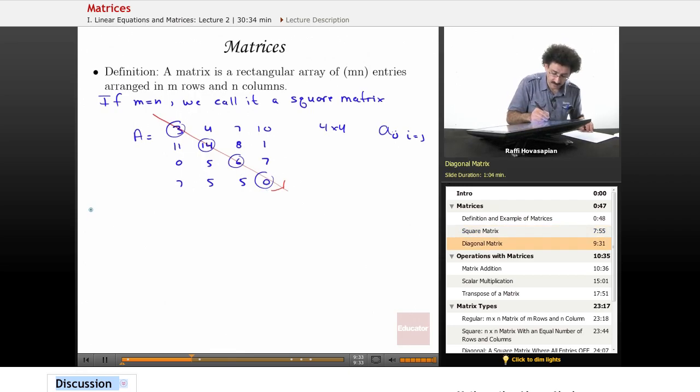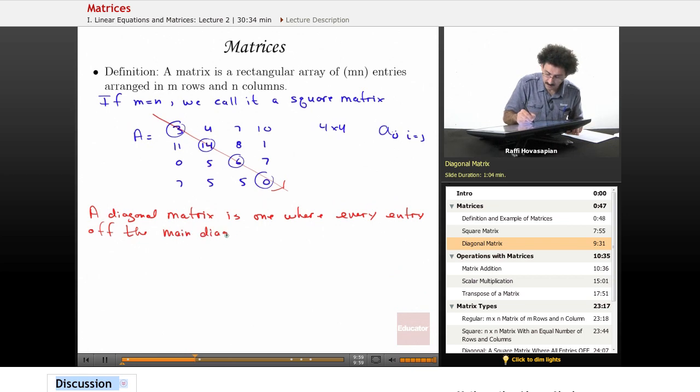A diagonal matrix is one where every entry off of the main diagonal is zero.